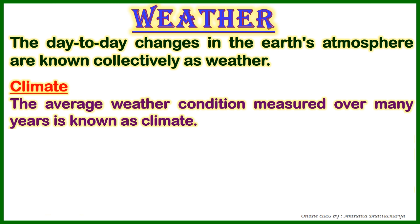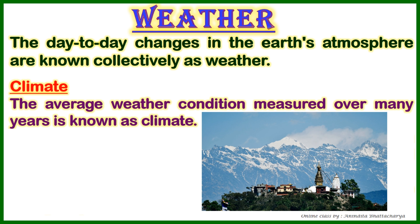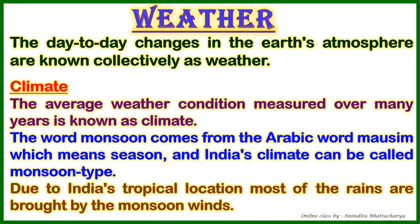Next, climate. The average weather condition measured over many years is known as climate — typically 20 to 25 years of average weather pattern over a large area for a long period of time. Weather refers to day-to-day changes in a small area for a shorter period of time. That is the key difference between weather and climate.